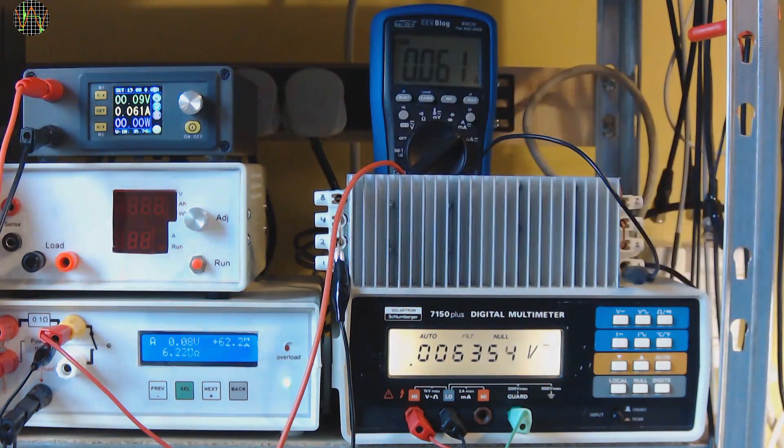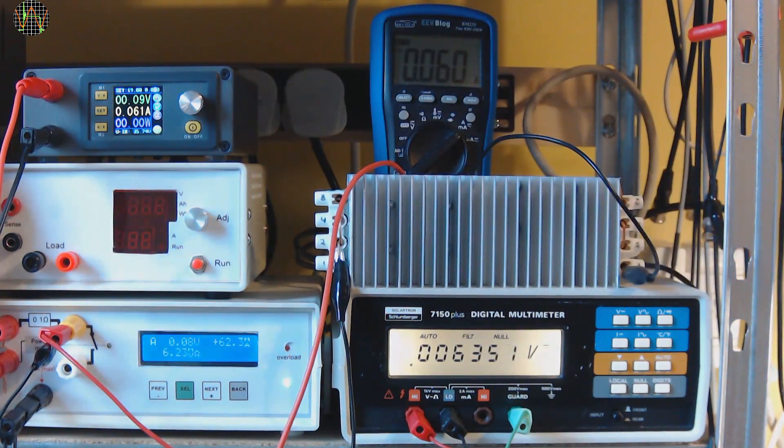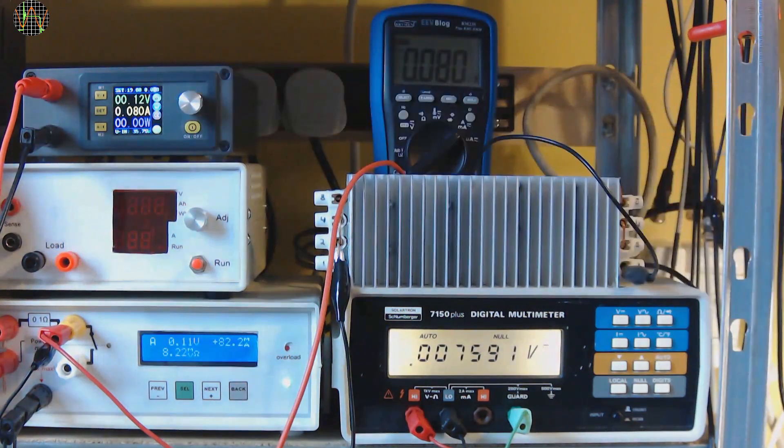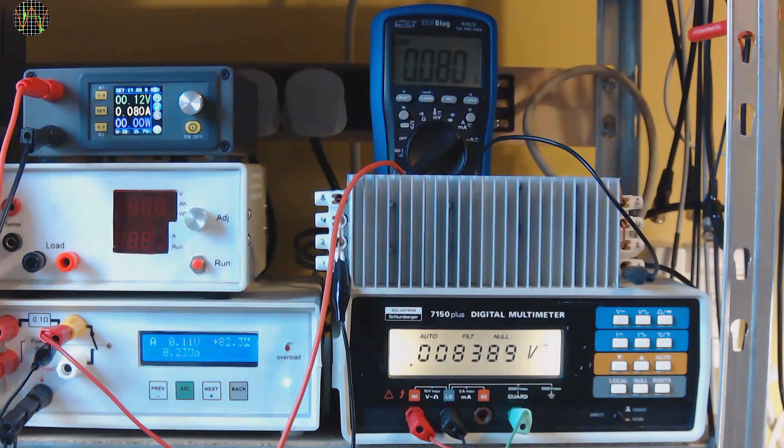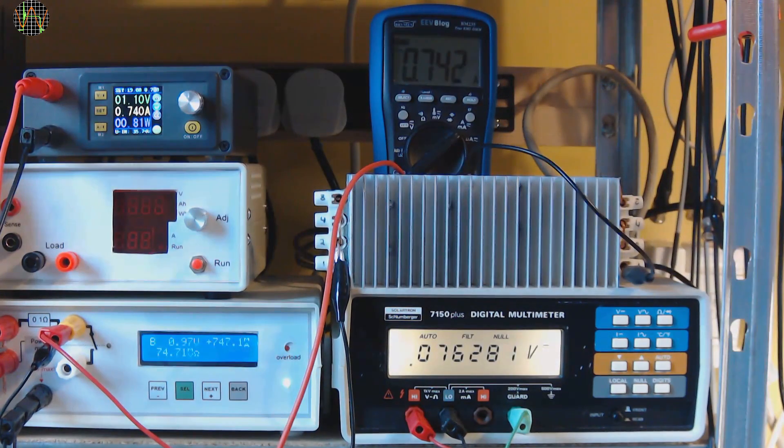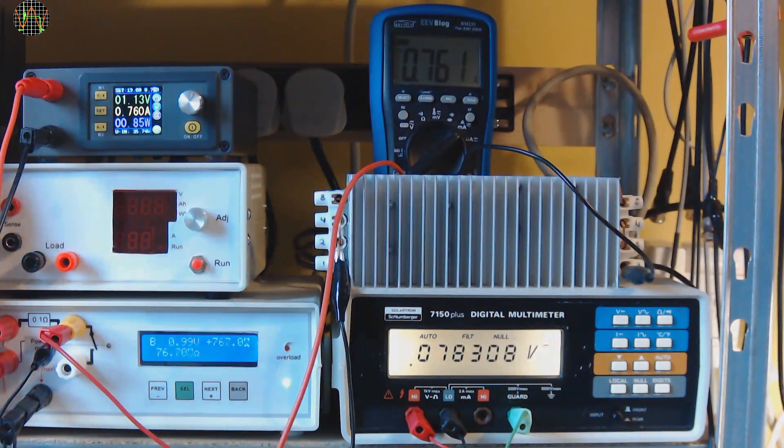For ranges A and B, I step the current limit up in 20mA steps which translates to about 2mV shunt voltage change and note the reading on the SolarTron as well as the Powermon which is shown in mV with an ohm symbol behind to indicate that it is the voltage drop across the shunt resistor.